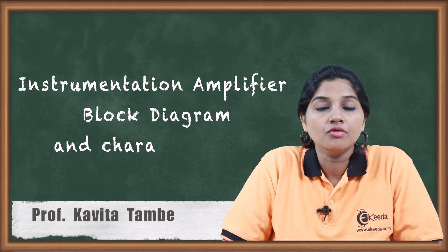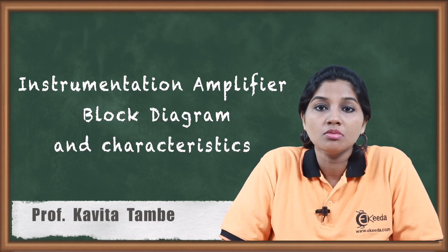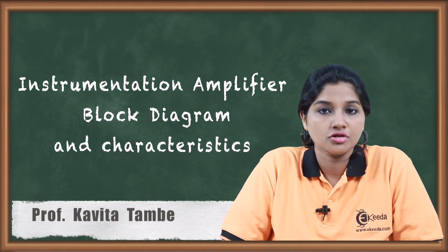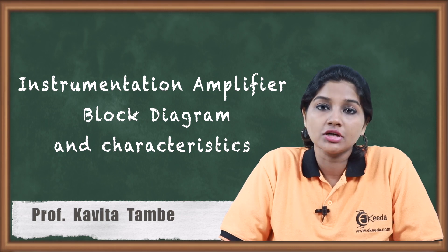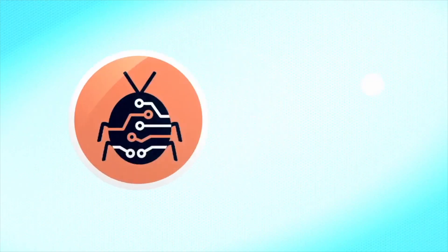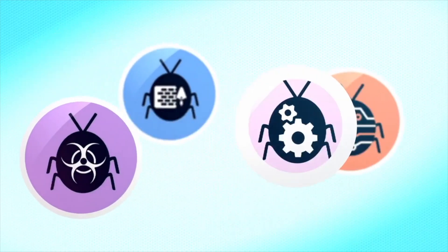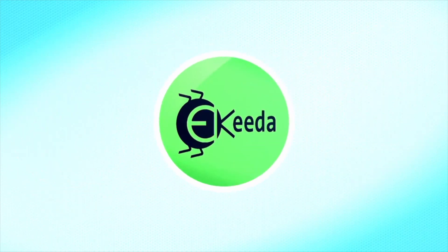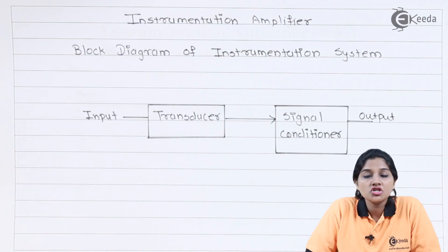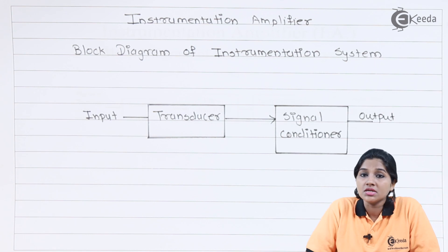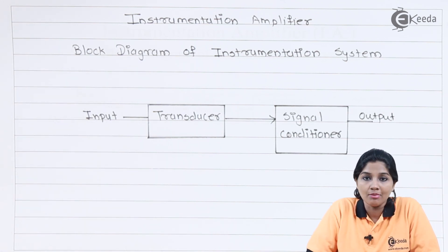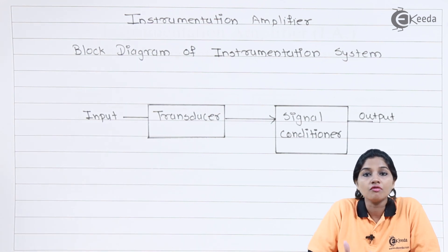Hello friends. In today's video, we are going to see the block diagram and characteristics of instrumentation amplifier. So let's begin with the topic. Instrumentation amplifier is basically a difference amplifier. But before going to start with the instrumentation amplifier, let's see what is basically the need of signal conditioning and signal processing.